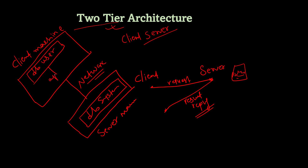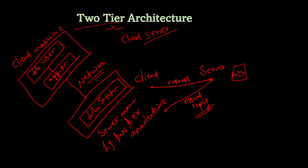We can say application programs — also called applications — are part of two-tier architecture. Now the server provides the database functionality and it allows the client to perform operations on the database through a direct internet connection. The server machine provides database system functionality, and the client accesses the database through a direct internet or network connection.